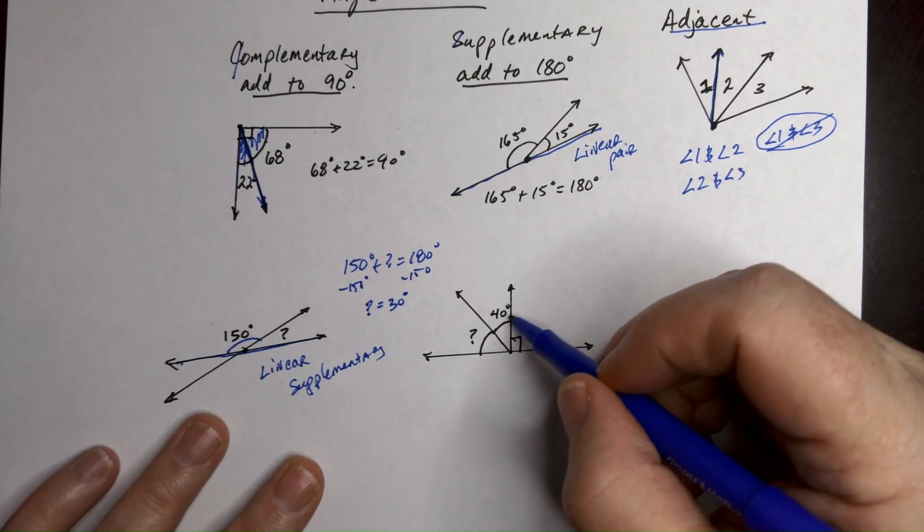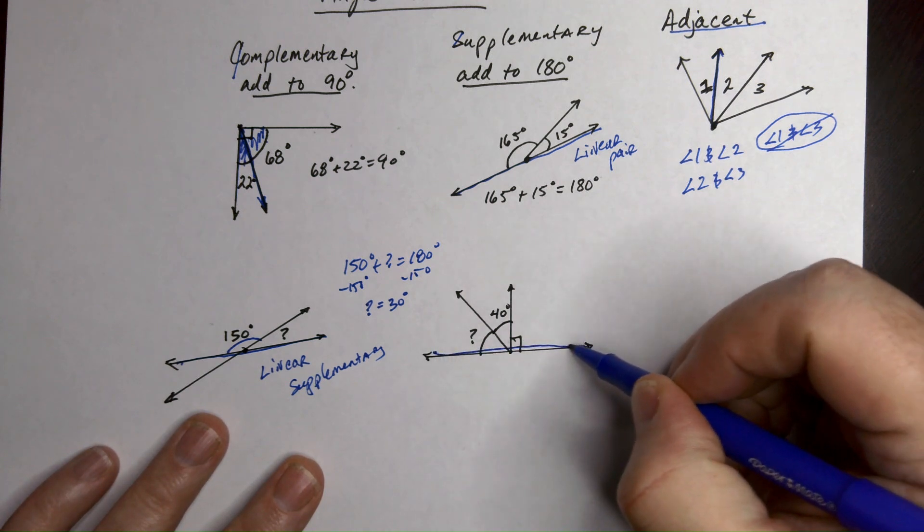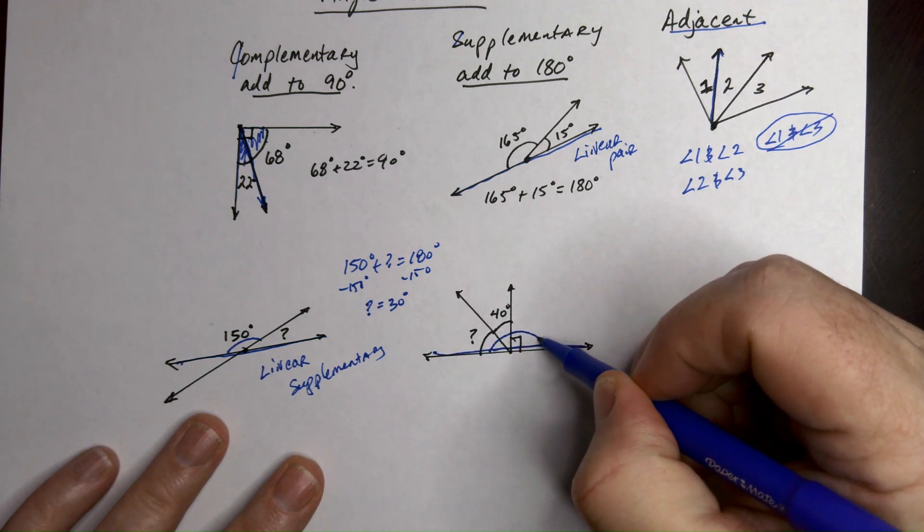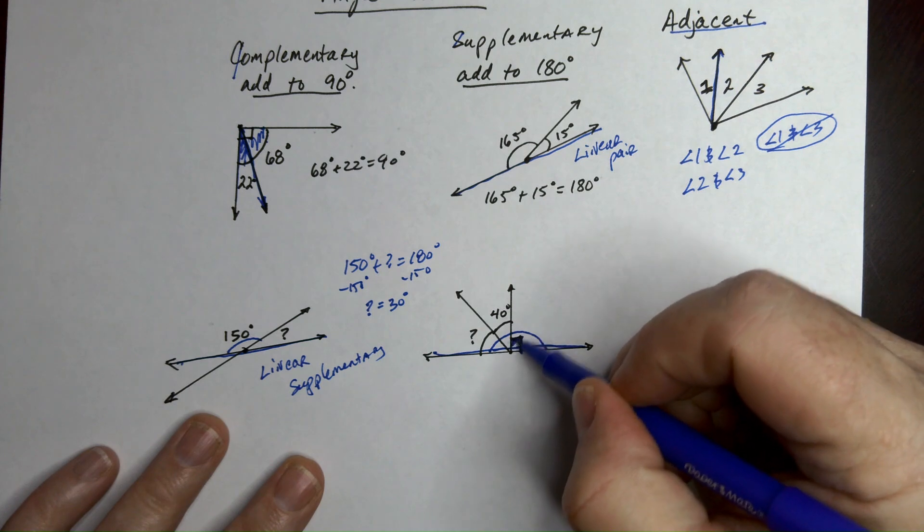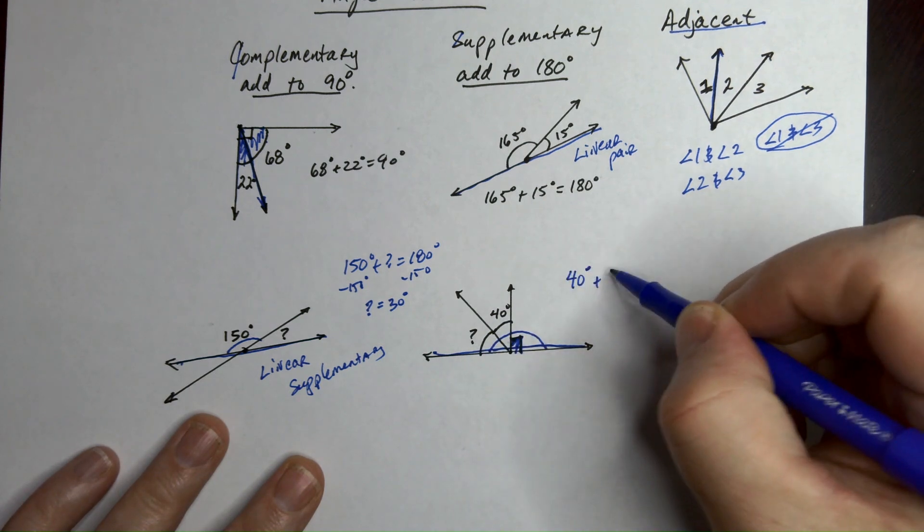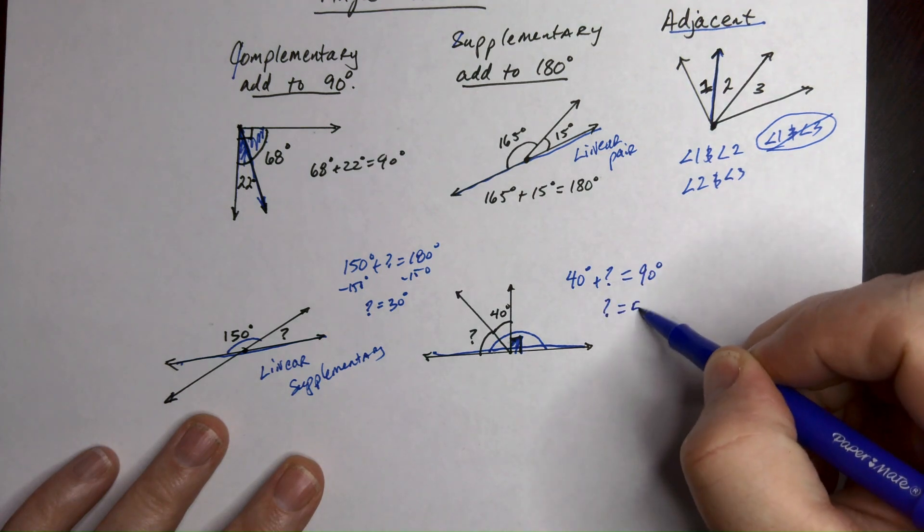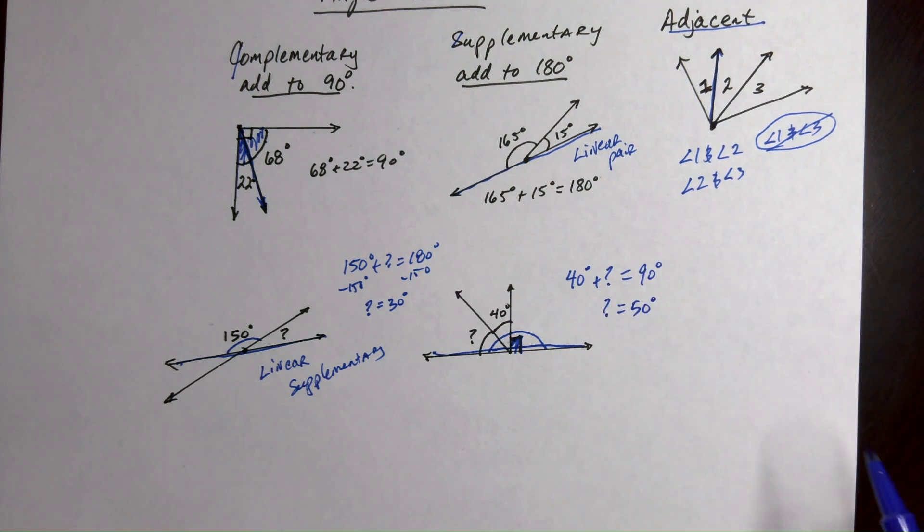All right, now here we have another one. These two, well you see how this is a straight line right here? That means this entire thing is 180. This part is 90 which means the other part is 90. So 40 plus the question mark is going to be 90. So the question mark then must be 50 degrees. That's how those work.